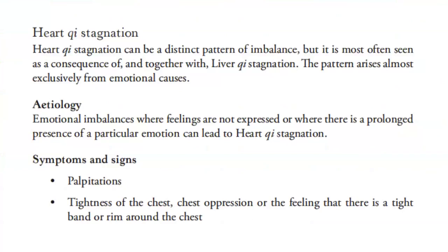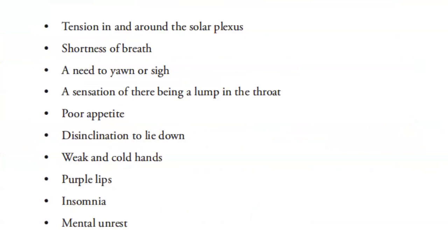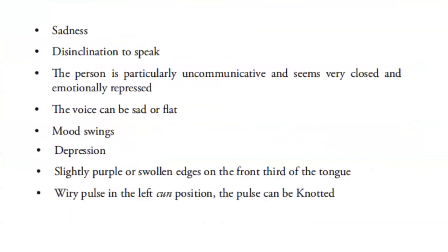For the symptoms and signs, heart qi stagnation manifests with palpitations, tightness of the chest, chest depression or the feeling of a tight band around the chest, tension in and around the solar plexus, shortness of breath, a need to yawn or sigh, a sensation of a lump in the throat, poor appetite, disinclination to lie down, weak and cold hands, purple lips, insomnia, mental unrest, sadness, disinclination to speak. The person is particularly uncommunicative and seems emotionally repressed. The voice can be sad or flat, with mood swings and depression. The tongue has slightly purple or swollen edges on the front side, and the pulse is wiry on the left cun position and can be knotted.